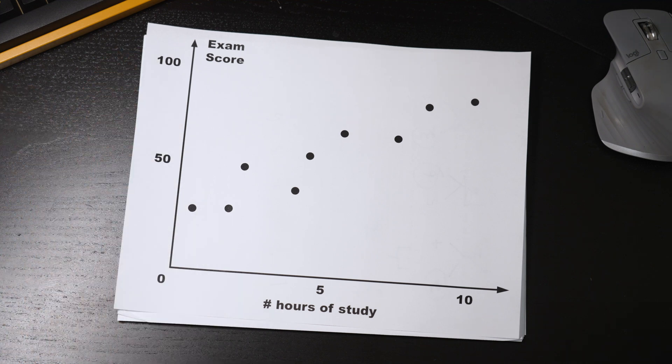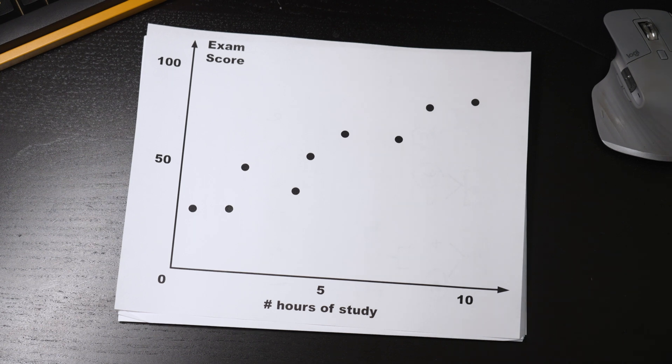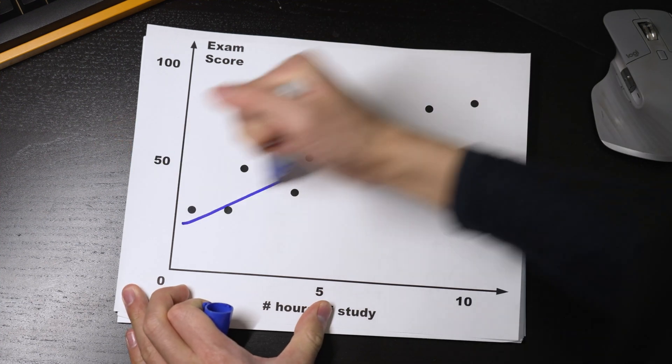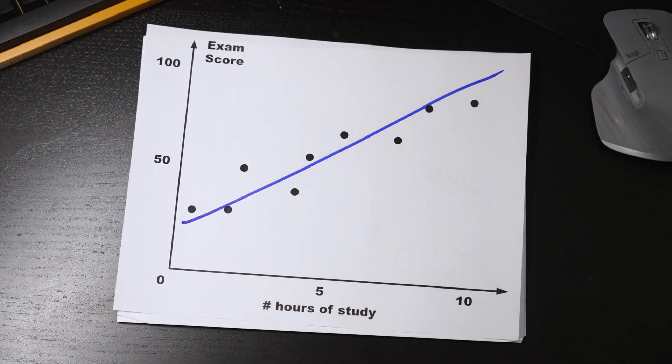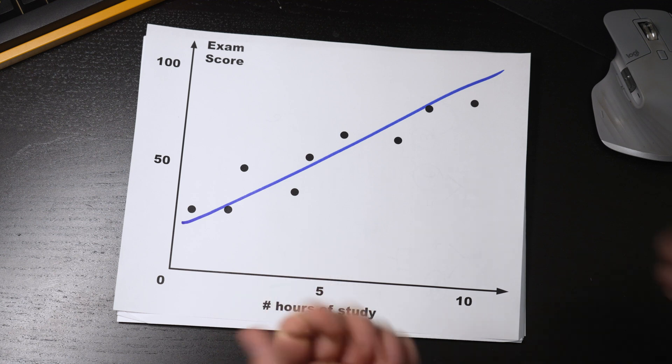I want to create a model to predict someone's exam score based on how much they studied. Oh, that's it! I'm done. That's my model right there. I'm dead serious, that's probably a pretty good model. So what just happened?